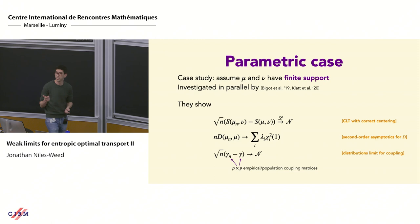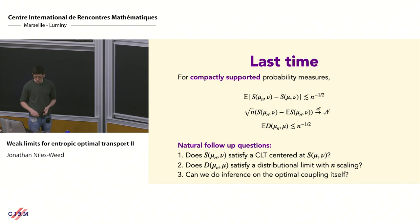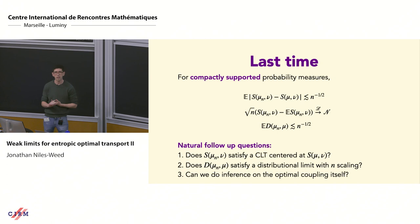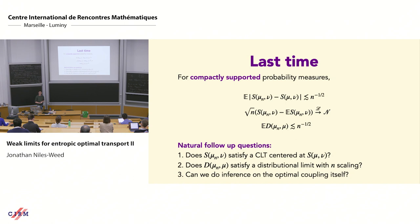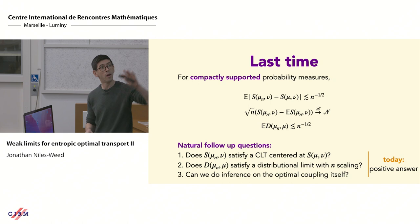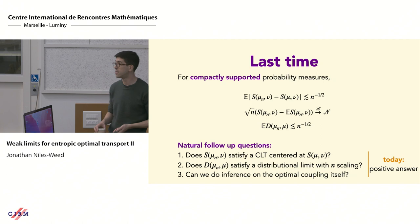Both papers got to these ideas at the same time with similar techniques. So we have a CLT with correct centering in the parametric case, second-order asymptotics for the Sinkhorn divergence, and a CLT for the coupling itself. Returning to our situation — the continuous case — the same questions arise: can we get a CLT with the right centering? Can we get correct second-order asymptotics for the Sinkhorn divergence? And can we reason about an asymptotic limit for the coupling? The main point today is that the answer is yes to all three, even in the non-finitely-supported compact case.